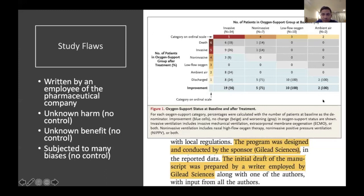The remdesivir case series was flawed for several reasons: it had no control arm, so we cannot determine benefit or harm from the medication. Some enrolled patients were on room air or low-flow oxygen and probably would have done fine with supportive care alone. For ventilated patients, 56 percent were reportedly extubated or discharged, but patients not yet extubated were not counted as deaths. The study was also designed, conducted, and the manuscript initially drafted by a writer employed by Gilead Sciences, the manufacturer — so caution is warranted. We still need the randomized controlled trials to confirm any benefit.